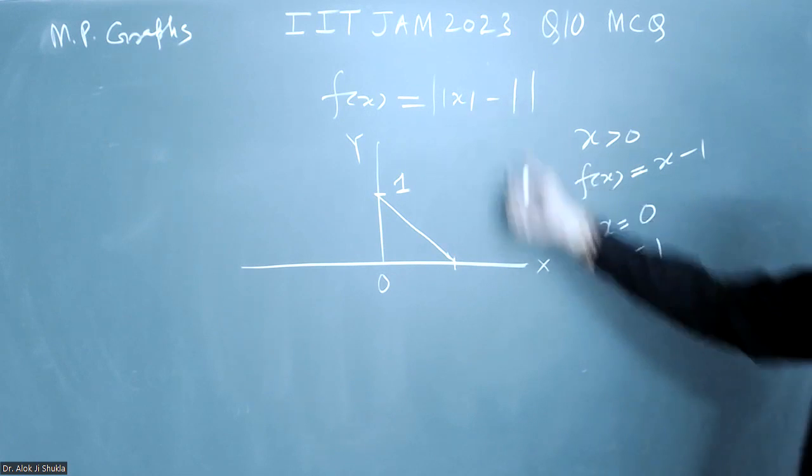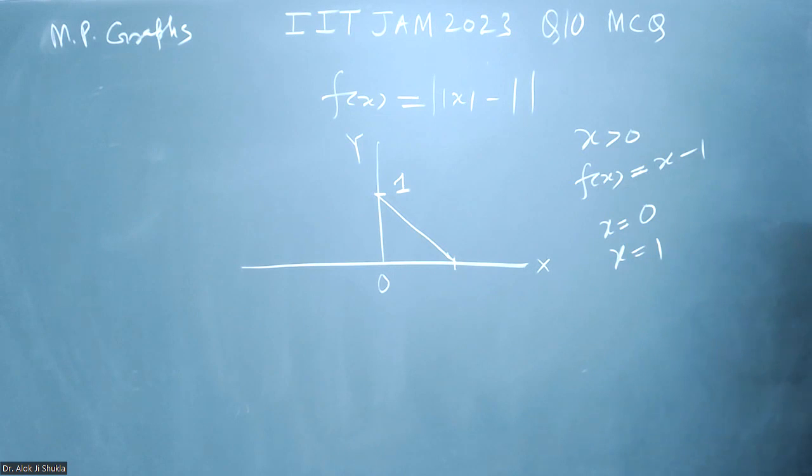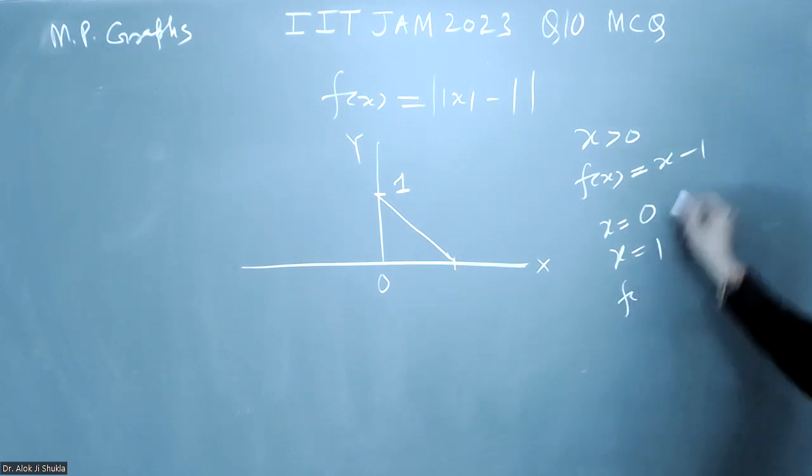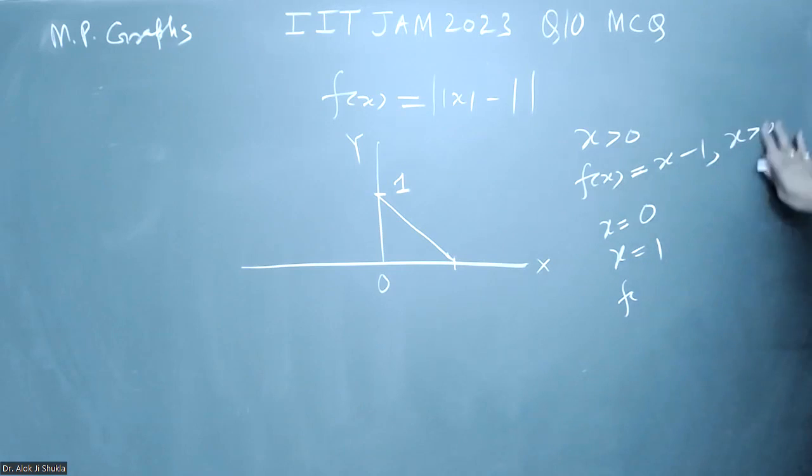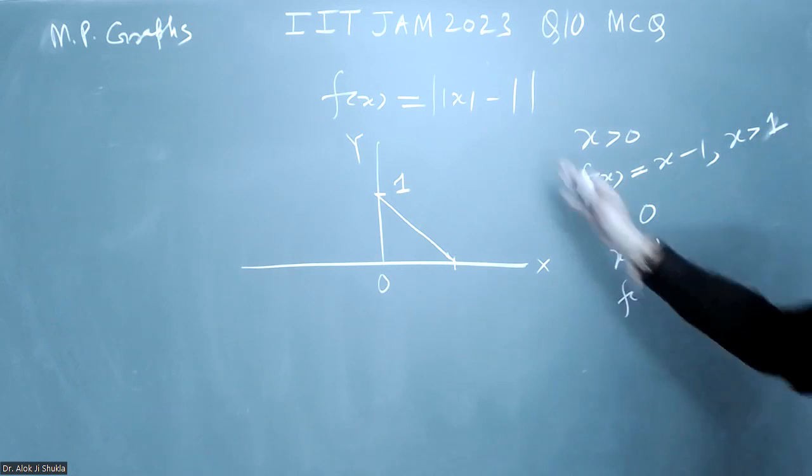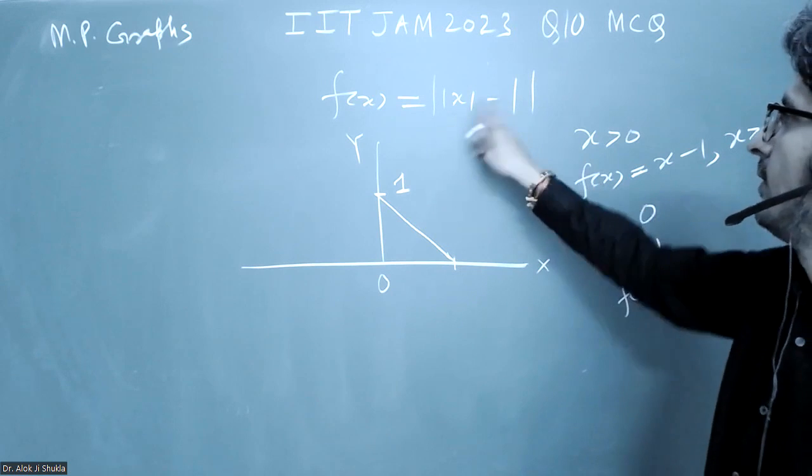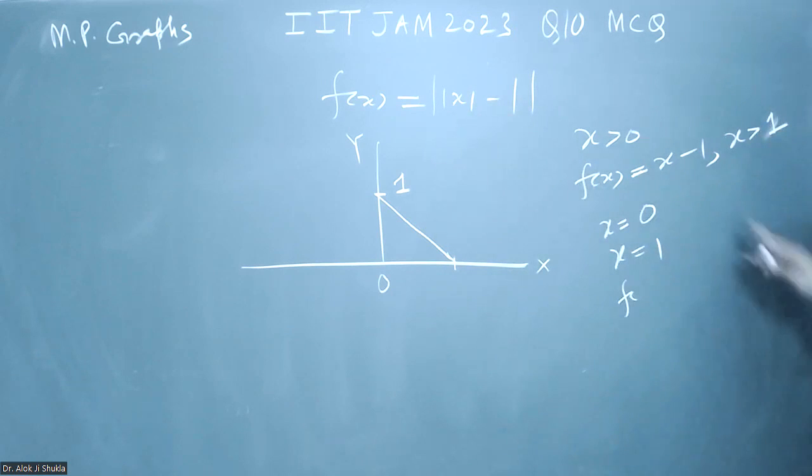So your graph will become simply f(x) is equal to x minus 1 if x is greater than 1. If x is greater than 1, then you will have a positive quantity here and your graph will be like this, x minus 1.